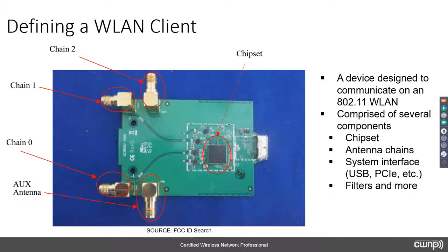I picked this adapter for a couple of reasons. First, it is an 802.11ac wave 2 adapter. Second, it works with a couple of protocol analyzers — CommView for Wi-Fi and AirMagnet Wi-Fi Analyzer Pro from NetScout. Inside there's a printed circuit board with four antenna connectors, which the FCC labeled chain zero, chain one, chain two, and an aux antenna.